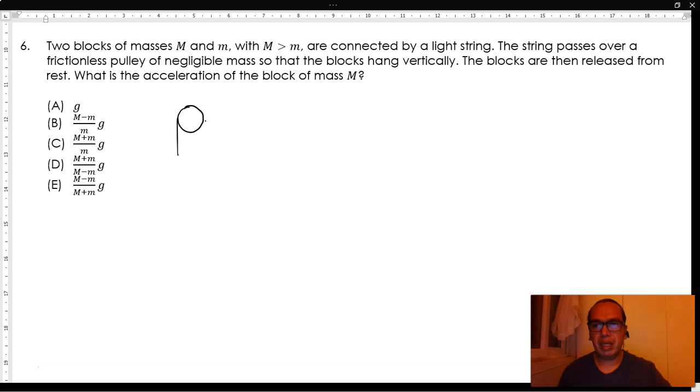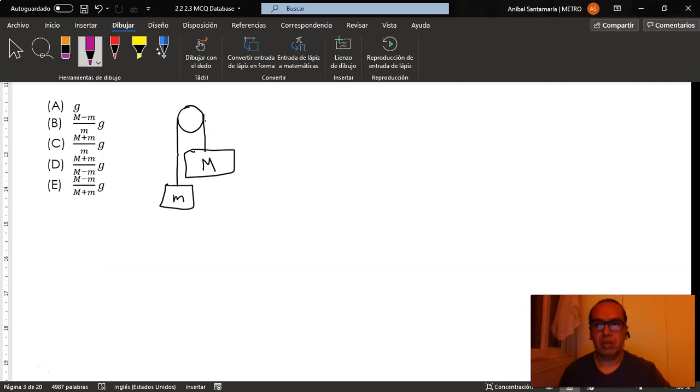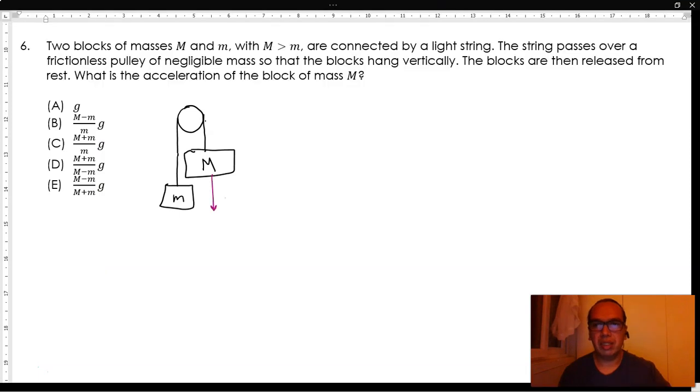Let us first make a little sketch of what they mean by this situation. We have two different masses, big M and little m, and we know that one of them is going to accelerate downward while the other one will surely accelerate upward due to the difference in mass.